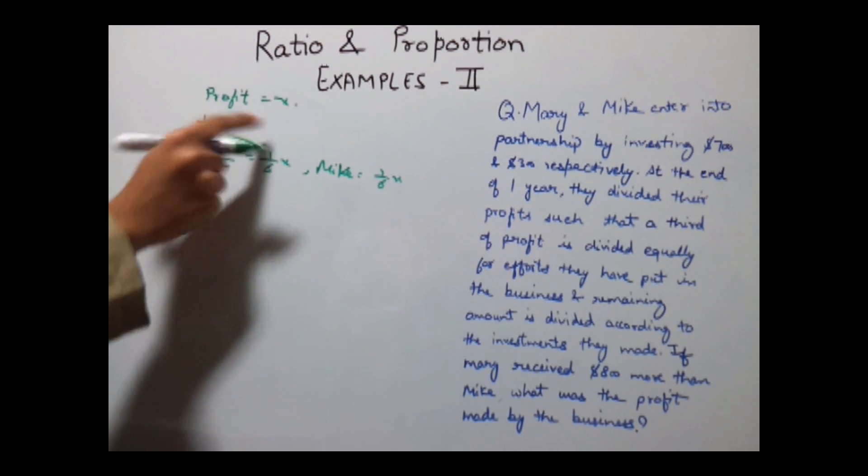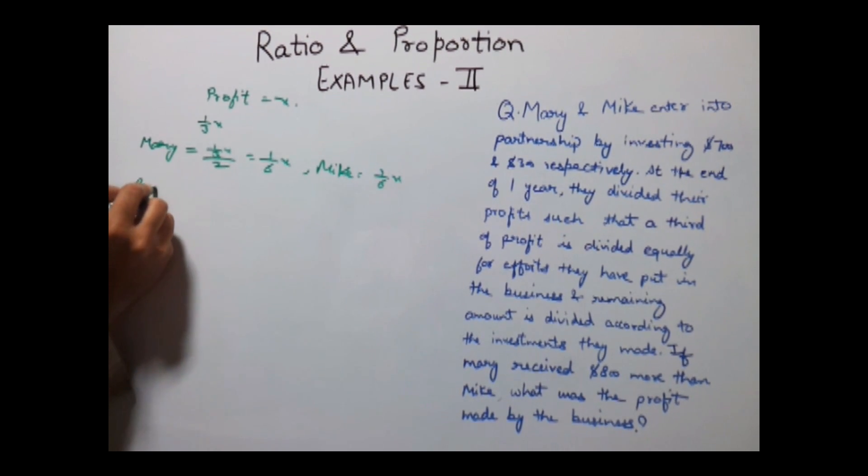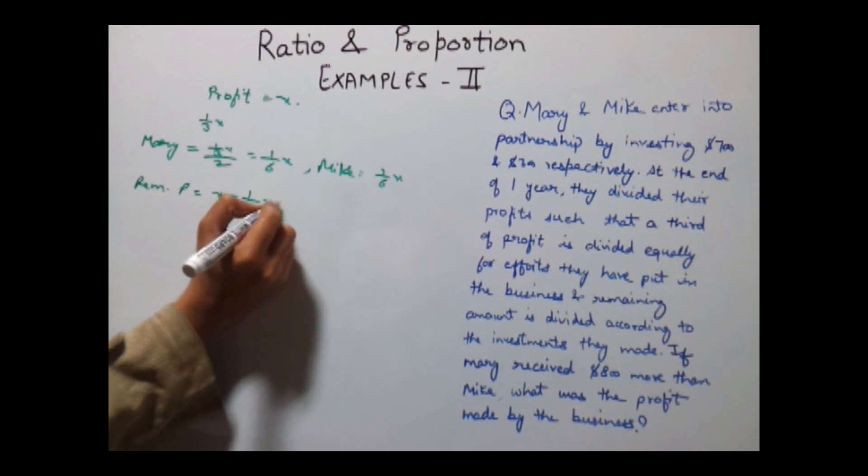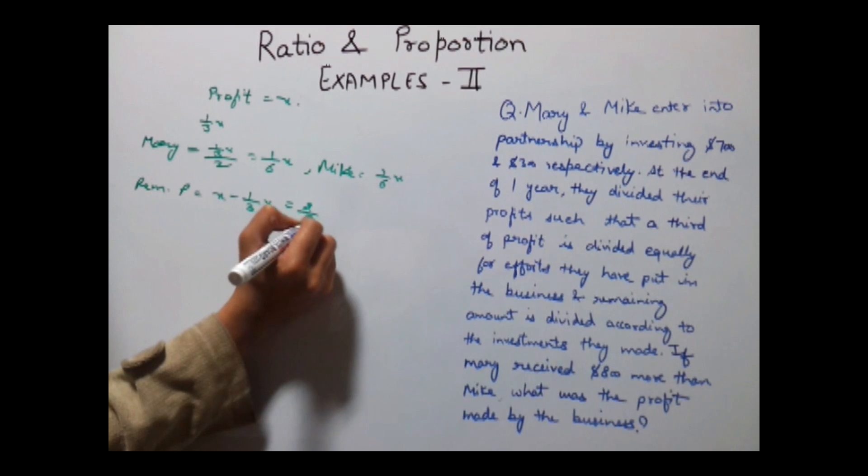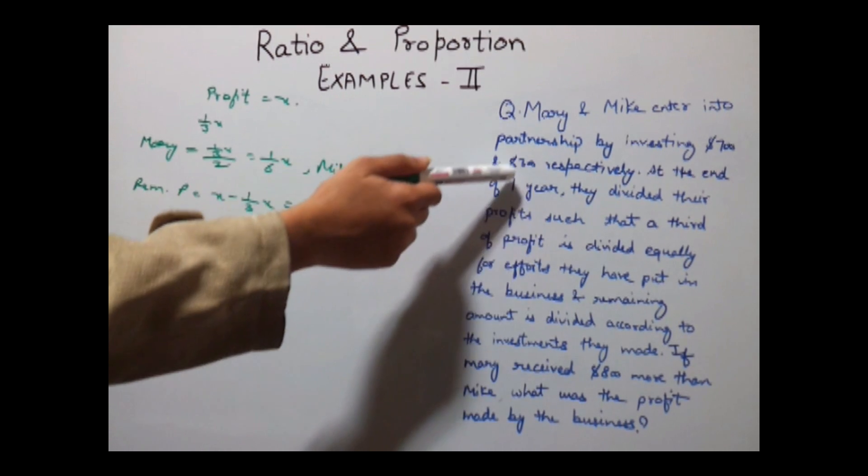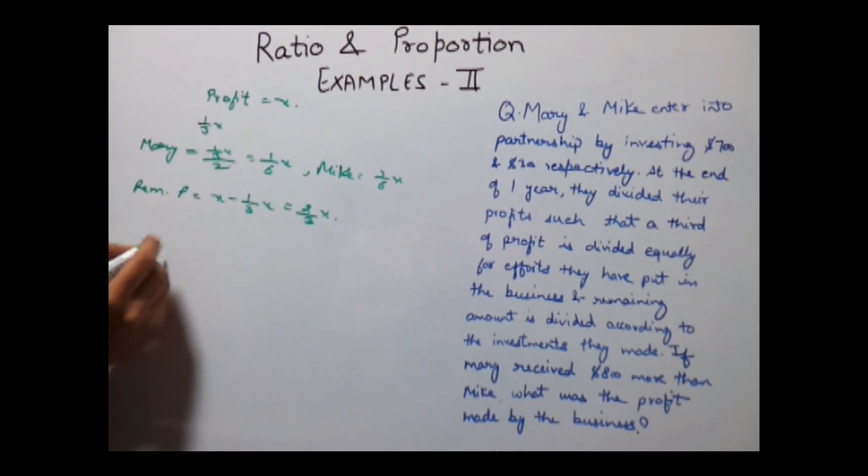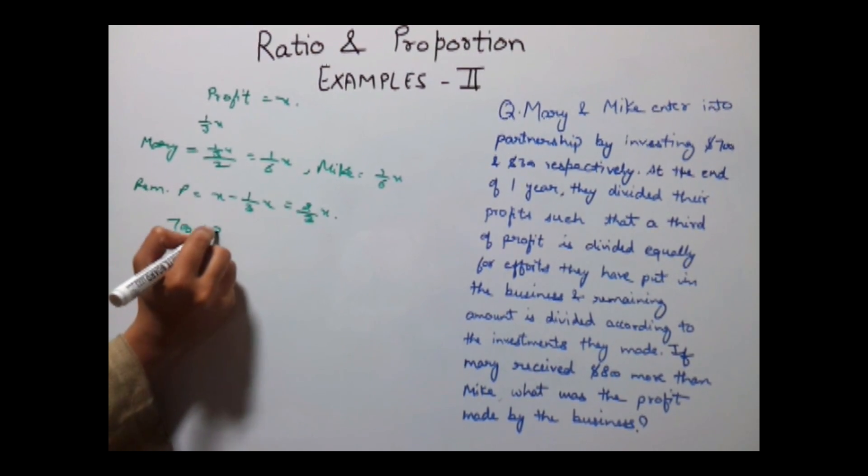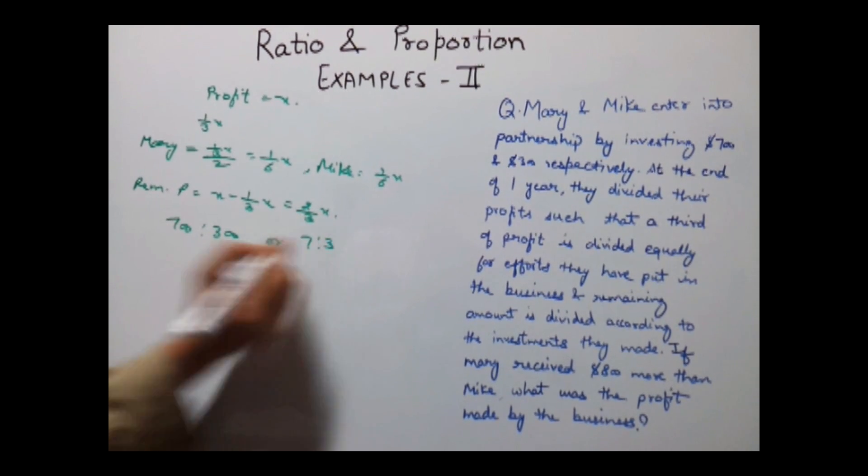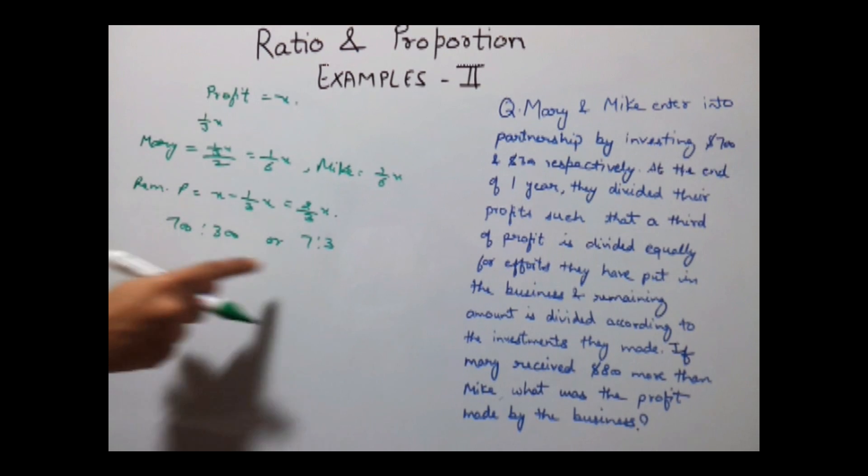Now, the remaining portion of this profit is equal to X minus 1/3 X which is equal to 2/3 X. This is divided according to the ratio of their investment and their investment ratio is 700:300 or 7:3.